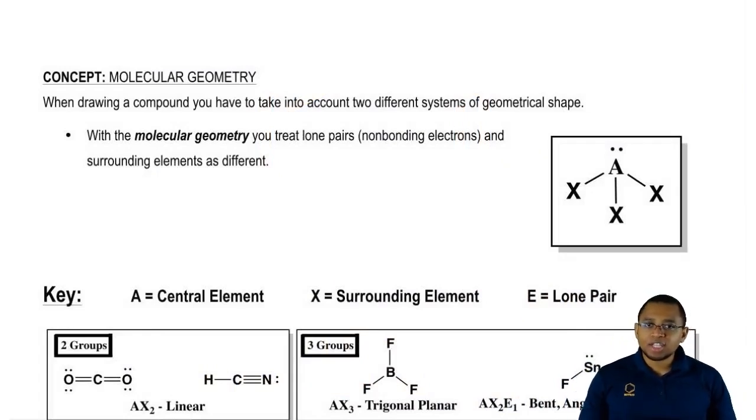We've said that there are two ways of looking at the shape of a structure. There's the electronic geometry and now there is the molecular geometry. The molecular geometry is the more complex way of looking at it, but it's the more accurate way of describing what's happening.